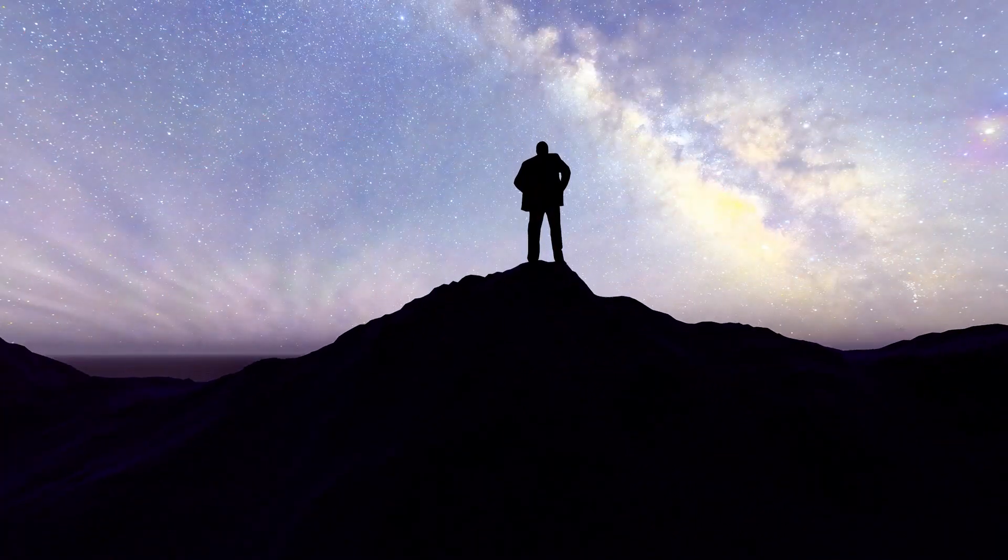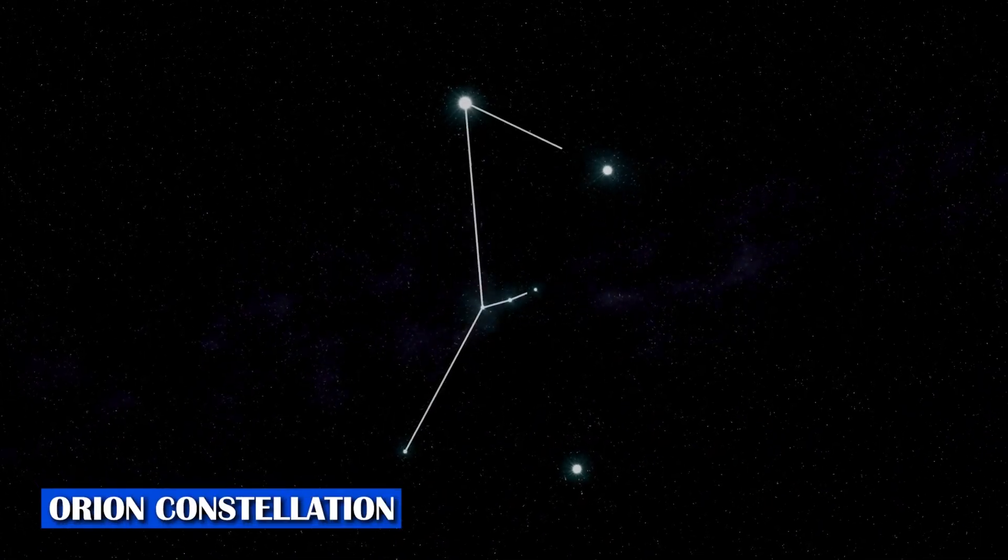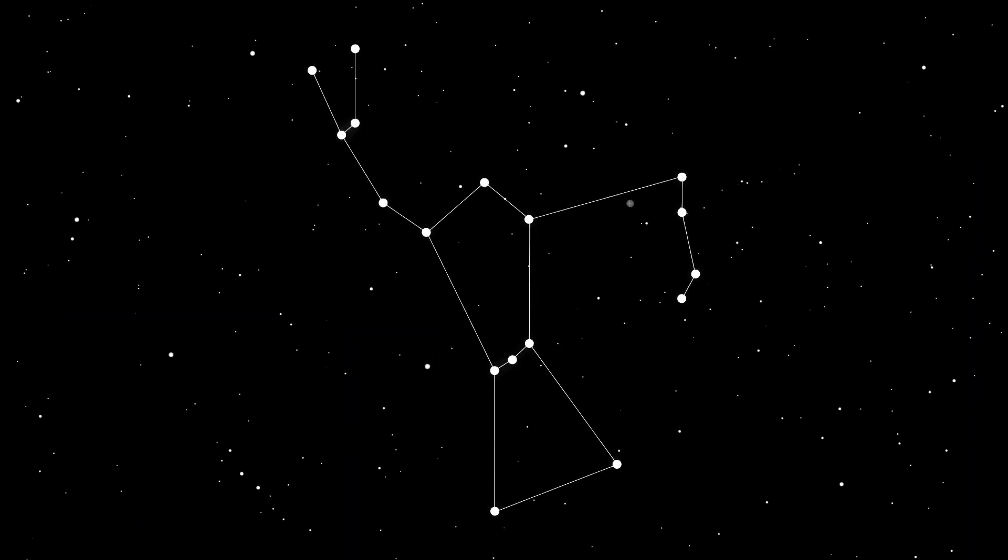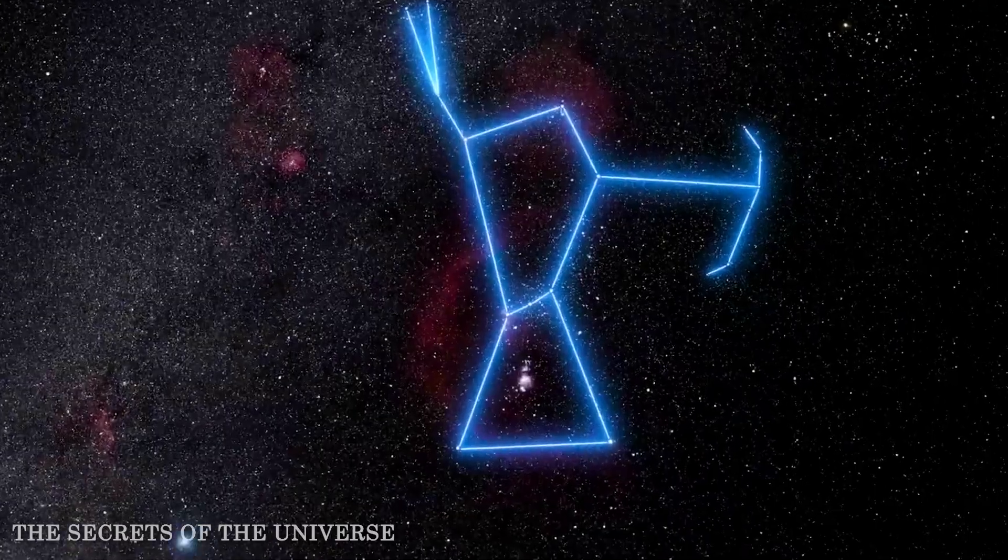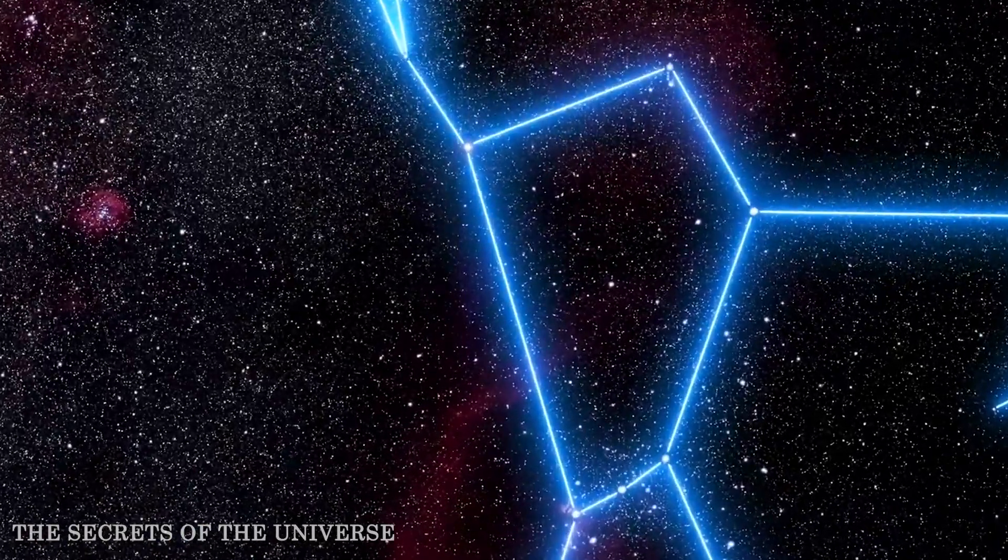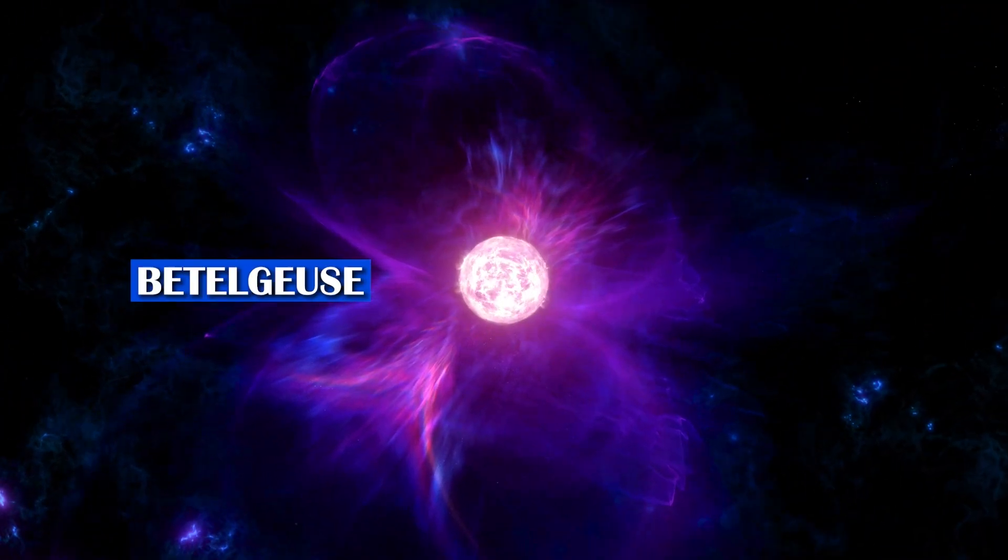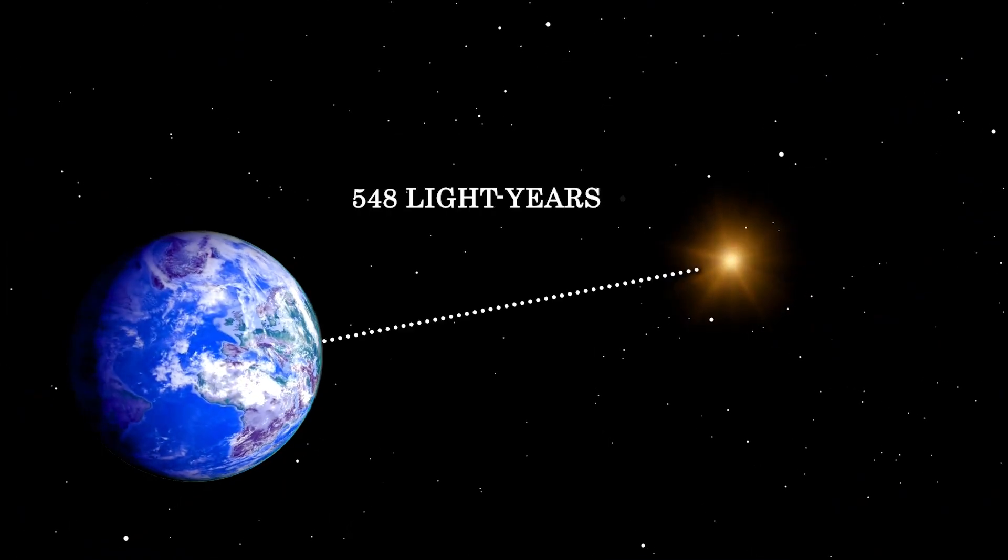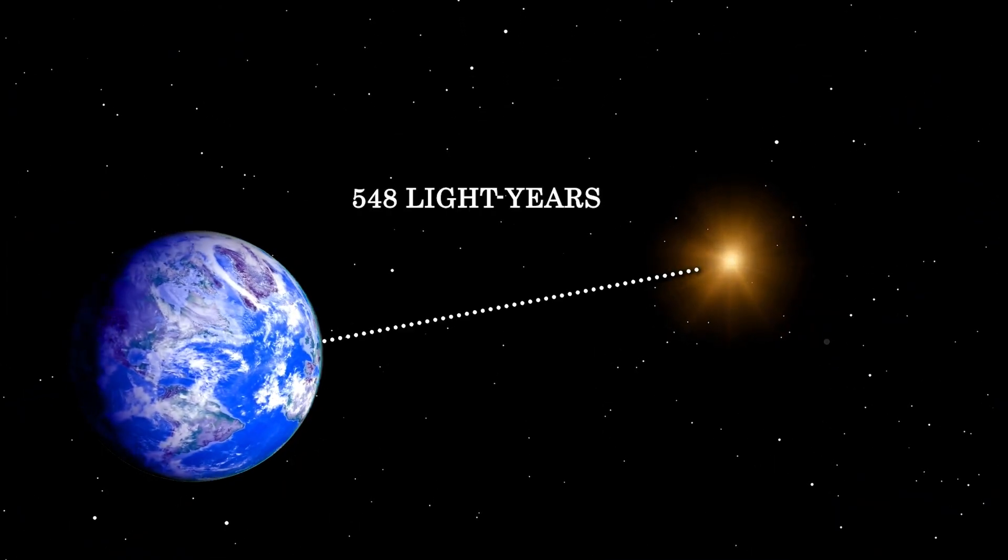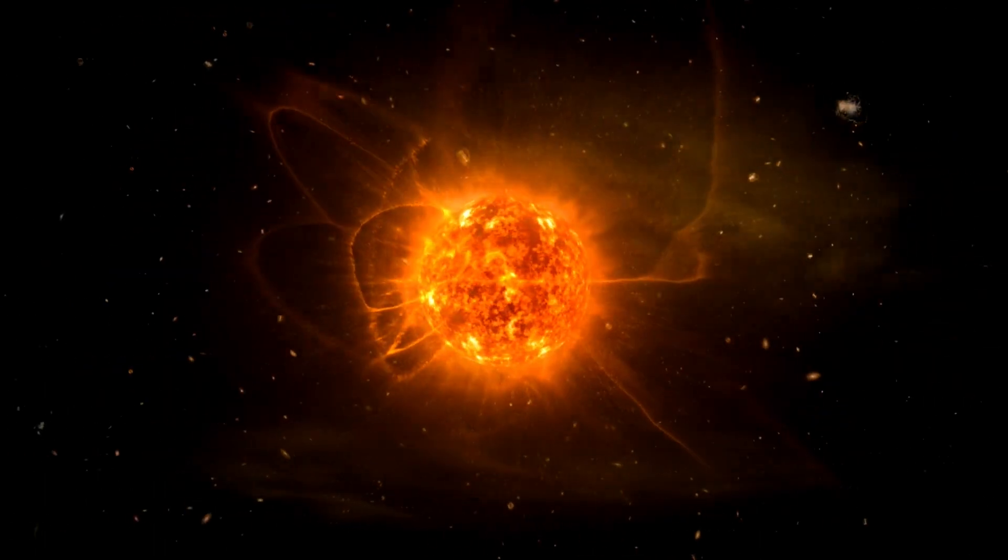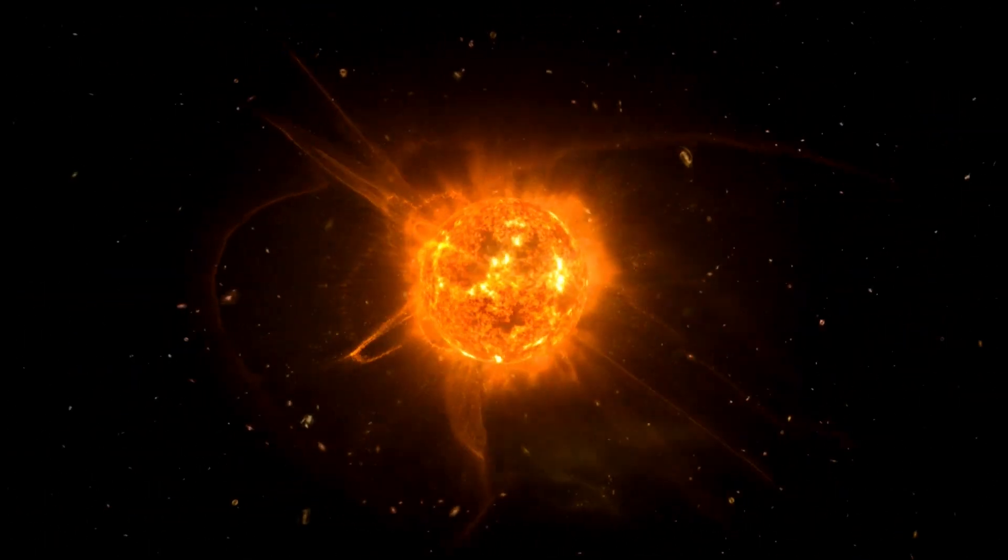Imagine looking up at the night sky and spotting the Orion constellation, one of the most easily recognizable patterns of stars. Now, focus on the top left corner of Orion's rectangular shape. Do you see that bright reddish star? That's Betelgeuse, a star located about 548 light years away from Earth. It has served as a guiding beacon for nighttime travelers for millennia.